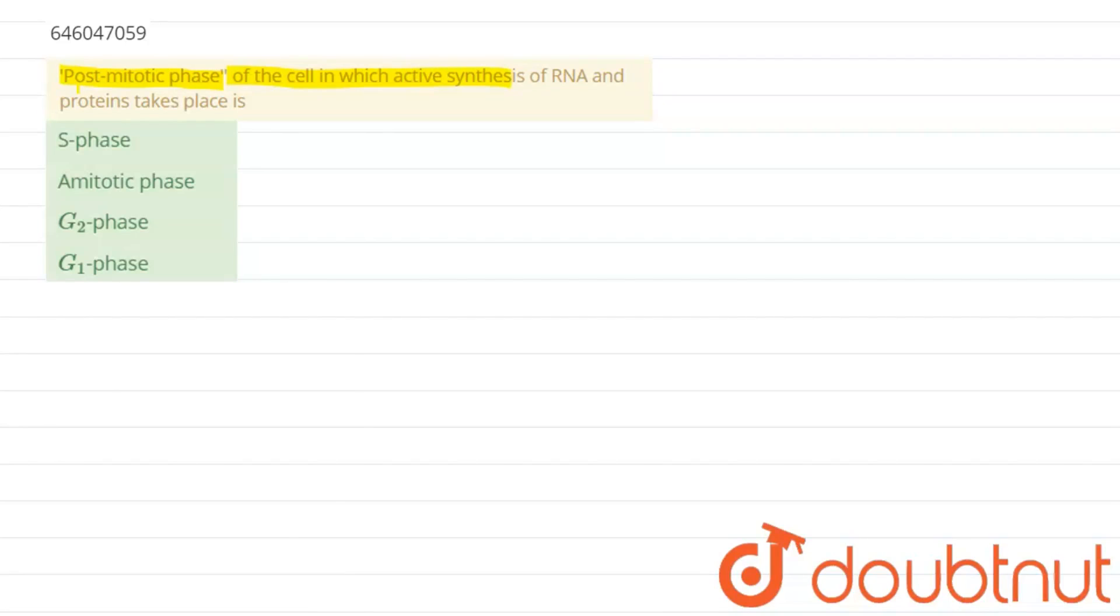So we'll see all these options one by one. Starting with the S-phase: S-phase of the cell cycle occurs during the interphase and it is responsible for the synthesis or replication of DNA. So in this phase, the replication of DNA takes place. This option is wrong as there is no synthesis of RNA and protein.